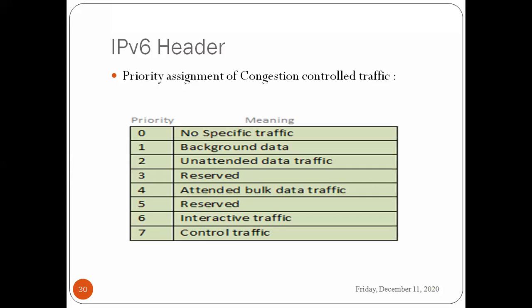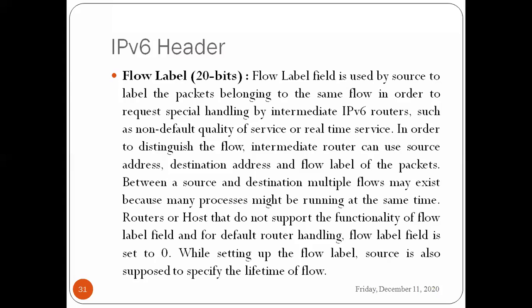Within the traffic class priority values: 0 is no specific traffic, 1 is background data, 2 is unattended data traffic, 3 is reserved, 4 is attended bulk data traffic, 5 is reserved, 6 is interactive traffic, and 7 is interactive traffic. Priority 0 is the least specific, and higher values indicate more important traffic.